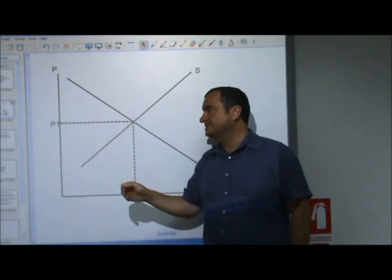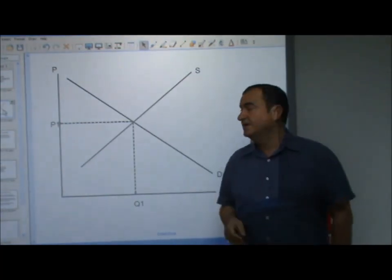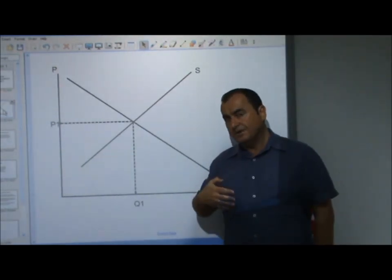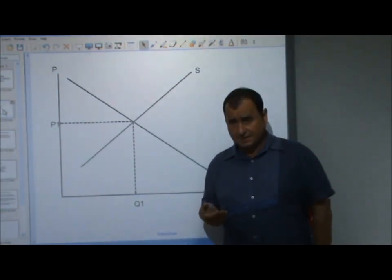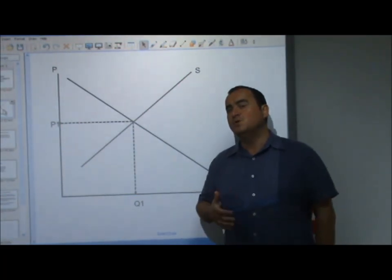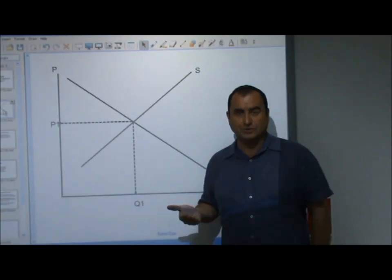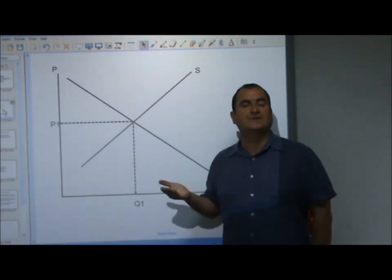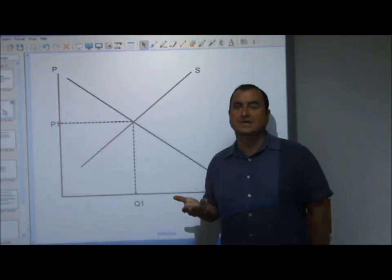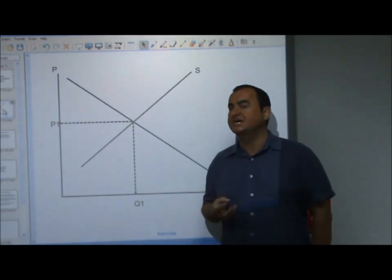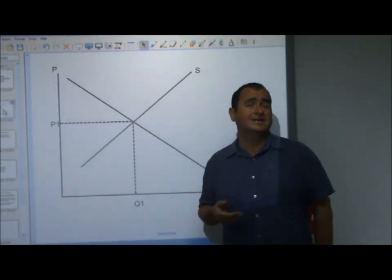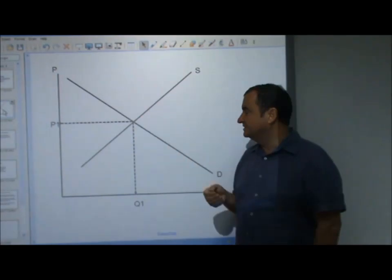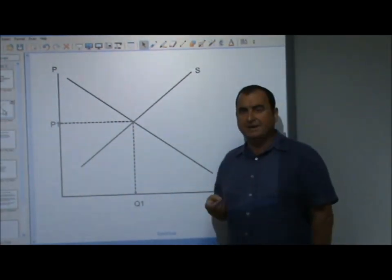And that gives us the equilibrium price, I've labelled it P1, and the equilibrium quantity Q1. This is the only price in this market where demand equals supply. And if left to market forces, this is the price which will be established in the market.